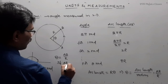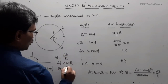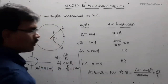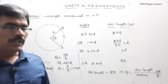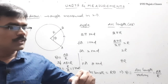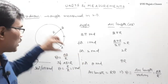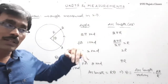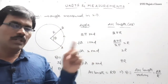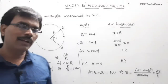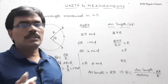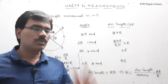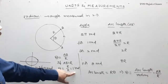Suppose if AB equals r, then theta equals r divided by r, which equals one radian. So what is the meaning of one radian angle? The meaning of one radian angle is when the particle makes a linear distance equal to the radius. For example, if the radius of this circle is 10 centimeters and the linear distance covered is also 10 centimeters, then the corresponding angle made by the object equals one radian.